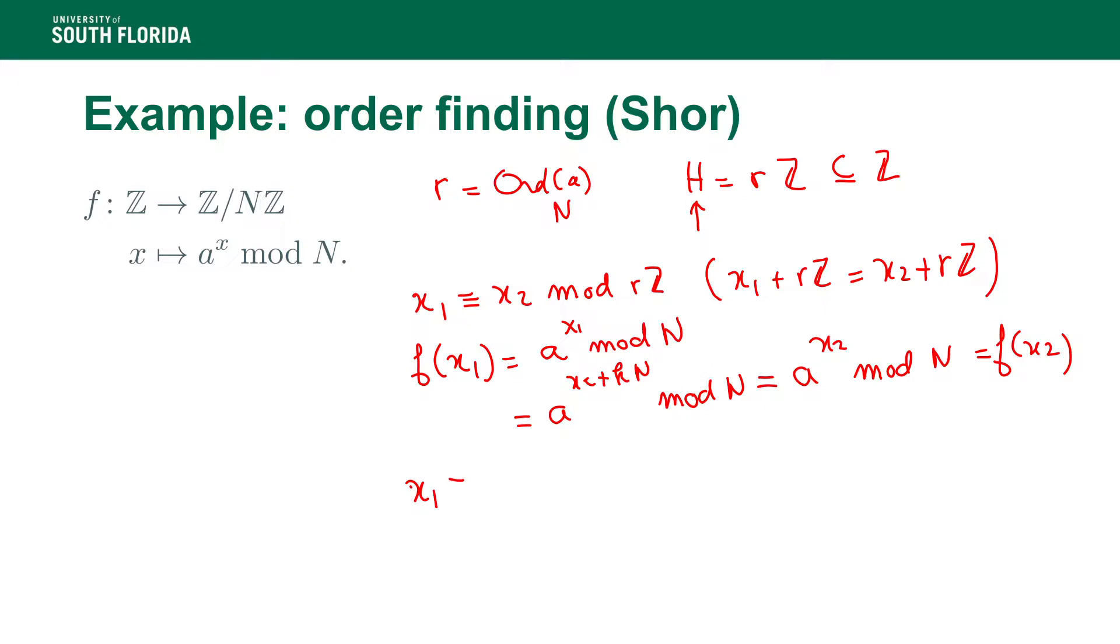On the other hand, if we do not have that X1 congruent to X2 mod RZ, then what we will have is that F of X1, which is A to the X1 mod N, and F of X2 is A to the X2 mod N, and what happens here is that A to the X1 minus X2 mod N is not equal to 1. So what it means is we do not have that these two values are the same, because for this to happen, for this thing to be equal to 1, we would have had to have R divide X1 minus X2. Which is not happening, because we just said that by hypothesis X1 is not congruent to X2.